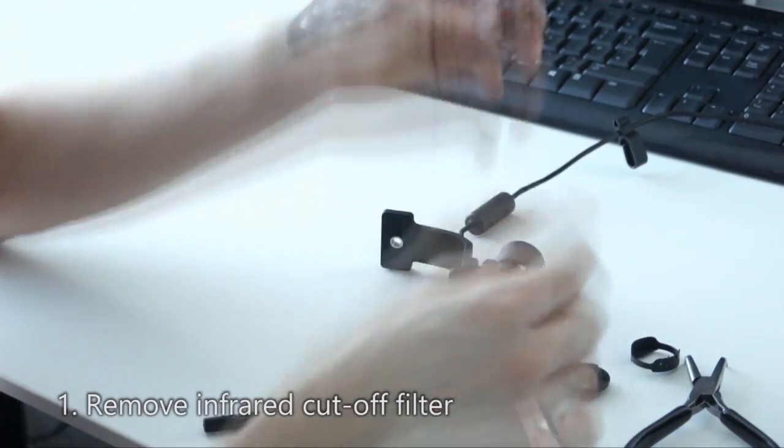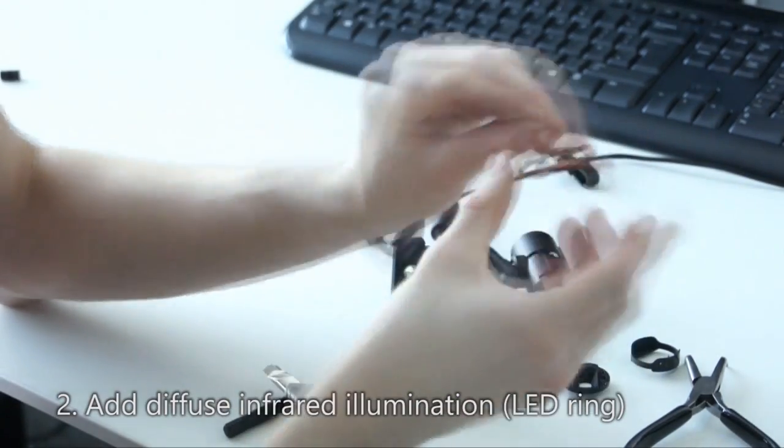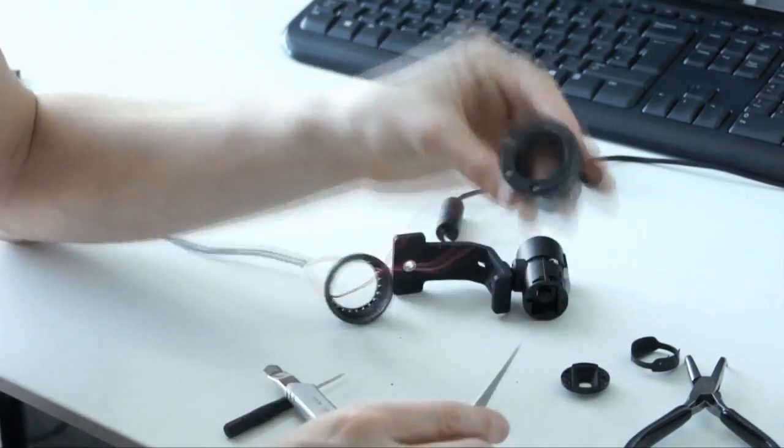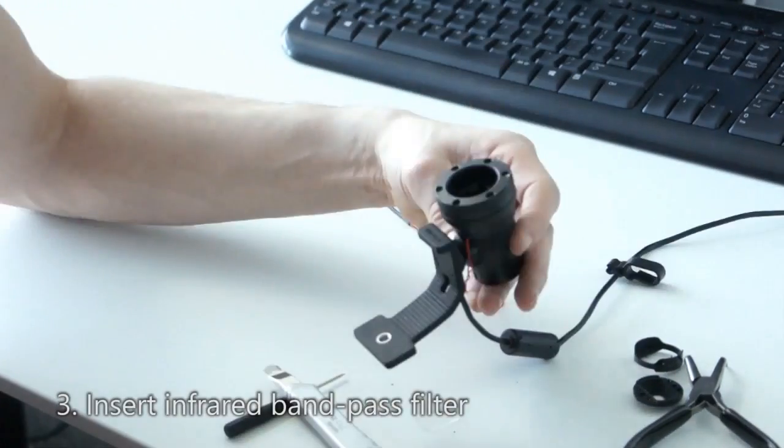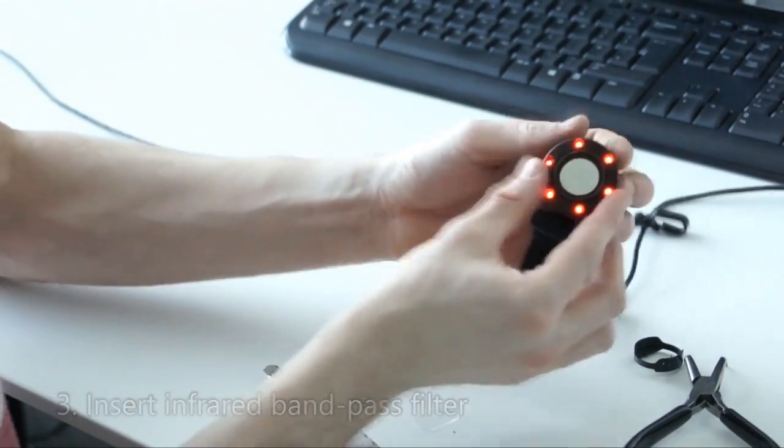We first remove the infrared cutoff filter from the lens. We then add a ring of infrared LEDs that is attached to the camera with a 3D printed case. Finally, an infrared bandpass filter is attached in order to block most of the ambient illumination.